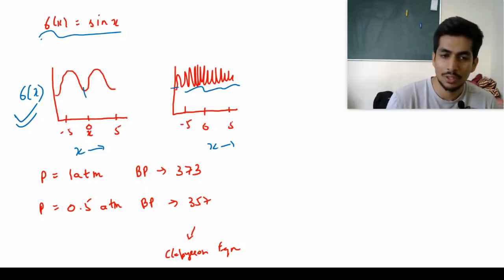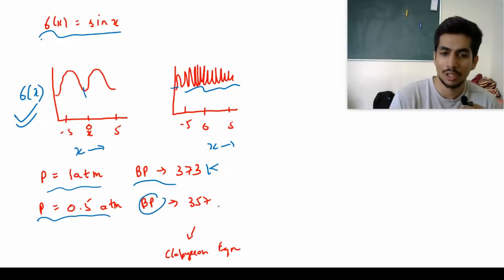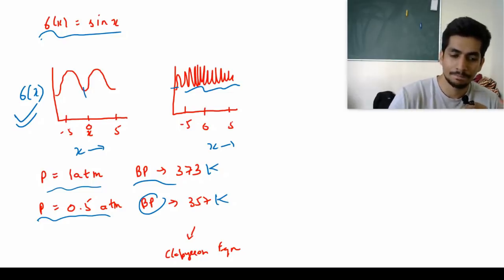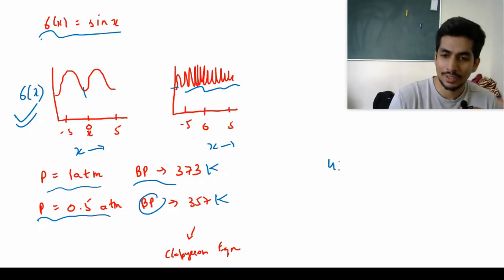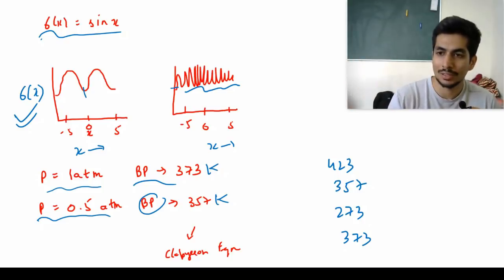There was a question from Clausius-Clapeyron equation where pressure was given as 1 atm and boiling point was given as 373 kelvin. They asked what will be pressure at 0.5 atm, so accordingly the boiling point will come out to be 357 kelvin. At half atm pressure the boiling point will be less. This was actually a very easy question because the options given to us were 423, 357, 273, and 373 kelvin.